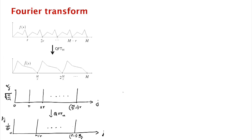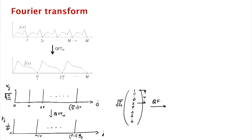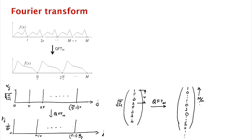Let's write this in vector notation. The input vector has normalization factor √(r/m) and entries that are 1, 0, 0, ..., 0, 1, 0, 0, ..., 0, 1, 0, ... where the distance between successive 1s is exactly r. When we perform the quantum Fourier transform, we get 1, 0, 0, ..., 0, 1, 0, 0, ..., with the distance between successive 1s now being m/r — the new period.